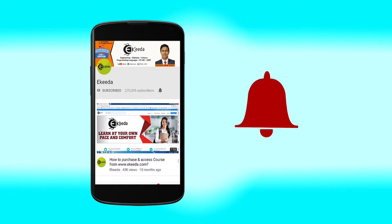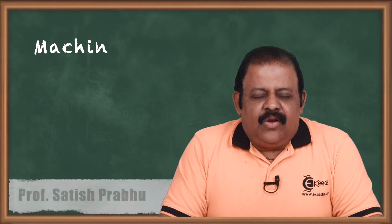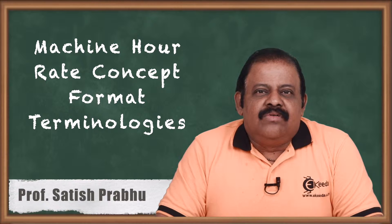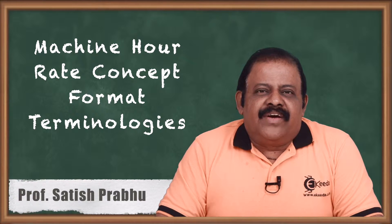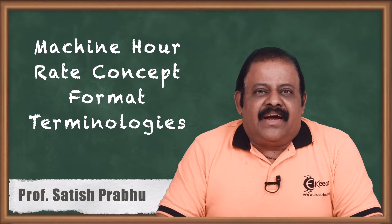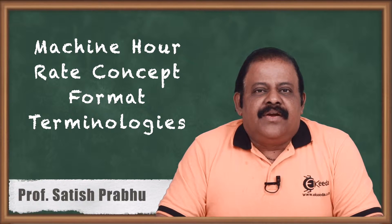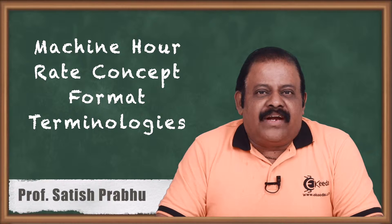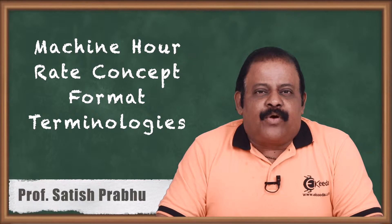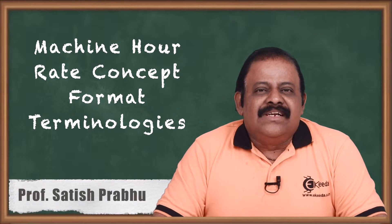Hello friends, today we will be discussing the concept of machine hour rate in relation to production overheads. Production overheads are required to be allocated to different departments, for that purpose we adopt absorption costing method so that we can arrive at the perfect cost of a particular product. How production overheads are to be allocated depends on various methods and parameters. One of the parameters for dividing production overheads is machine hour rates. We use different machineries for production purposes.